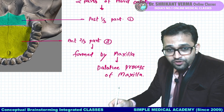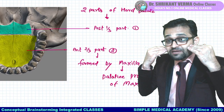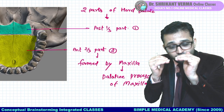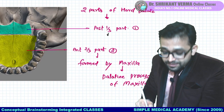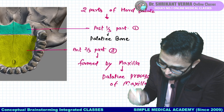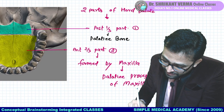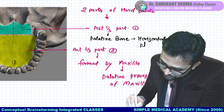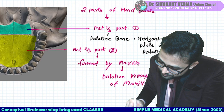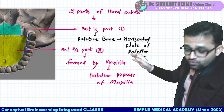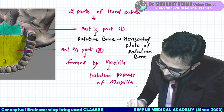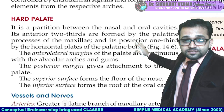So we have completed these points: posterior one-third is formed by the horizontal plate of the palatine bone. Now we are looking at its margins and surfaces. Our hard palate has a superior surface and an inferior surface. The superior surface is also called the nasal surface. The inferior surface faces the oral cavity, so it is also called the oral surface.